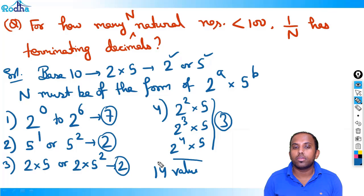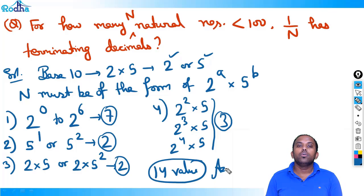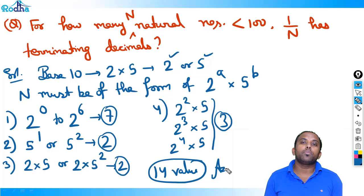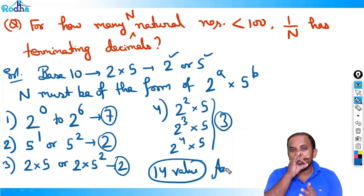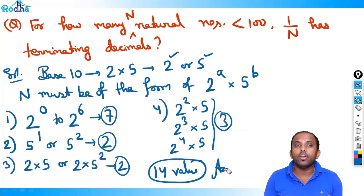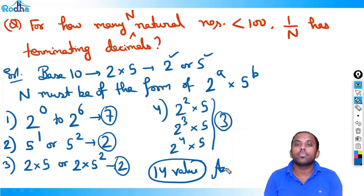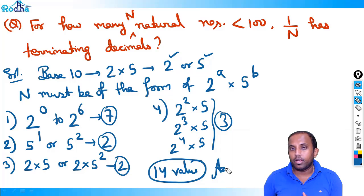Total 14 values of n are possible. These are quite good questions because after reading, you don't immediately understand. The basic understanding is: for how many n natural numbers less than 100 does 1/n have terminating decimals?